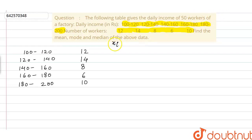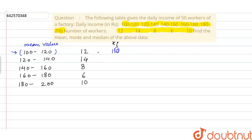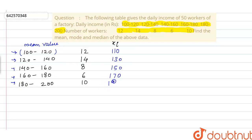Now we have to write the value of xi. Xi is basically the midpoint value of the class. For example, for the class 100 to 120, the midpoint is 110. For the next class, xi is 130. Similarly, we can calculate xi for the remaining three classes: 150, 170, and 190.